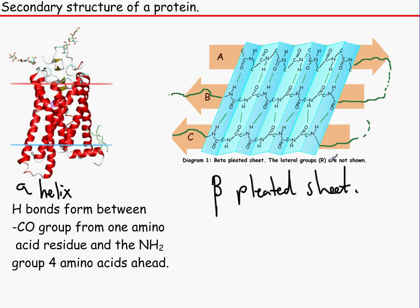Beta pleated sheets, on the other hand, are actually quite different because they actually just join to the amino acids which is next to it. It's basically like putting two arms together and stapling them. It doesn't form with anything four amino acids ahead or five amino acids ahead. It just basically forms hydrogen bonds next to it.